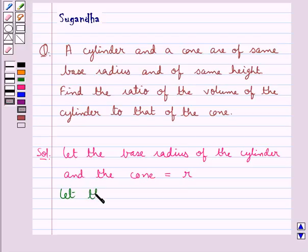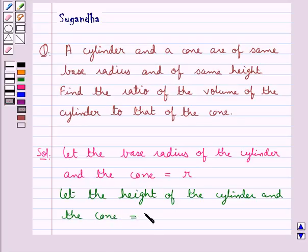Also suppose the height of the cylinder and the cone be equal to H. Since the cone and cylinder have the same height, we have taken that to be H.